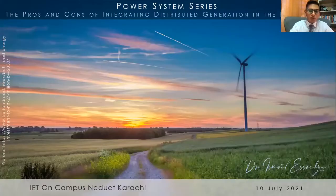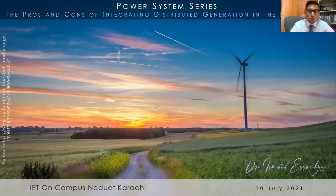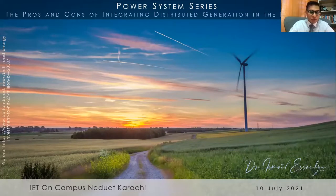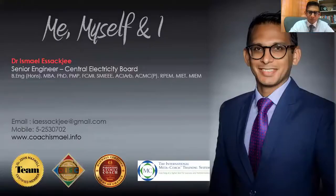What I'm going to talk about today is the pros and cons of integrating distributed generation in the power system. All around the world, we are trying to integrate renewable energy like PV, wind and different types of renewable energy into the power grid. Why? How? What are the consequences? At times we know, at times we don't. It may be done by trial and error. Let's see what the impacts are - they can definitely be positive and negative.